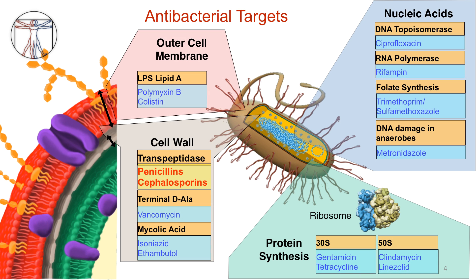This slide is a visual representation of the primary sites of activity for the four major classes of antibacterial agents. Recall there are four major categories of bacterial targets: cell wall, outer cell membrane, nucleic acids, and ribosomes. The cell wall active agents, and specifically the transpeptidase inhibitors highlighted in the yellow box, will be discussed in this video. The beta-lactam class of antibiotics inhibits this type of enzyme.